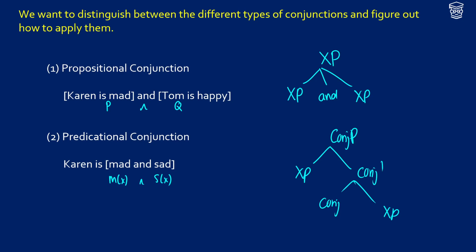If we think about the values, what's going to happen? We're going to take a T and a T together and get a T as an output. So the type of propositional conjunction is basically T, T, T — you take a truth value, combine it with another truth value, and get a truth value out. In the case of predicational conjunction, we're going to get something different, but it follows the same pattern.